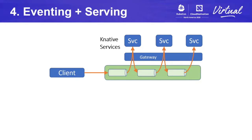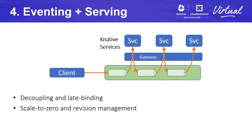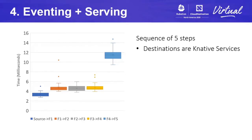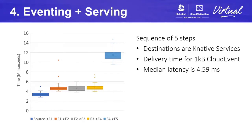Our last option combines both the Knative Eventing sequence and Knative services, giving us the features of both: the decoupling and late binding of the eventing sequence, and the ability to scale to zero and migrate between revisions of a Knative service. Again measuring a sequence of five stages deploying Knative services, and measuring the time for a one-kilobyte cloud event to be passed from one service to the next — 50% of all event deliveries take 4.59 milliseconds or less, or 4.37 milliseconds if we exclude the last step.